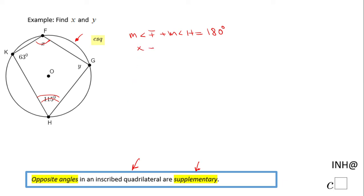Angle F is X and angle H is 115, and the sum of these two is 180, so we just subtract 115 and we get X equals 65.